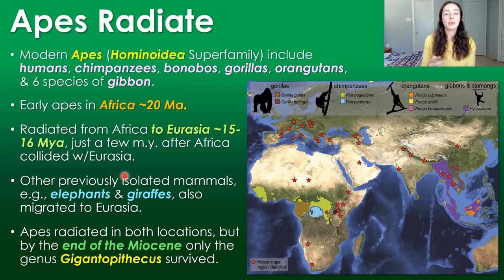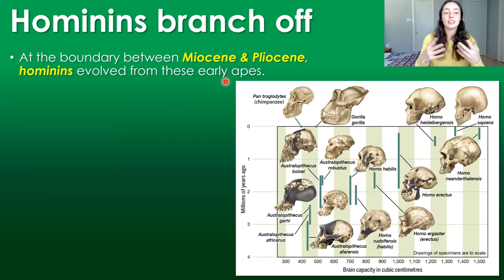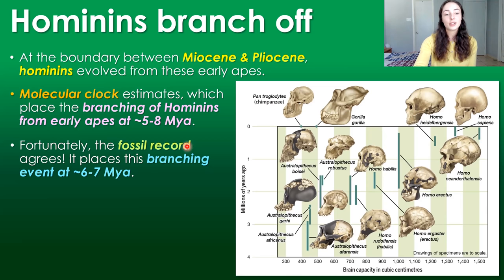Apes radiated in both Africa and Eurasia; however, by the end of the Miocene, only one genus is known to have survived: Gigantopithecus. Then at the boundary between the Miocene and Pliocene epochs, hominins evolved — the family Hominidae, which includes humans. Both the molecular clock and the fossil record agree on when this branching occurred: molecular clock estimates indicate hominins branched from early apes around five to eight million years ago, and the fossil record indicates around six to seven million years ago.